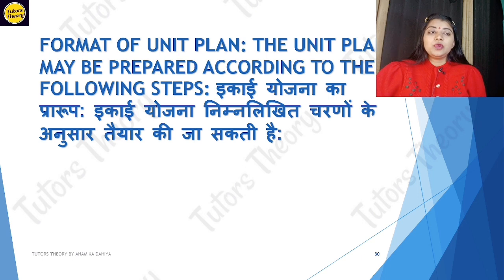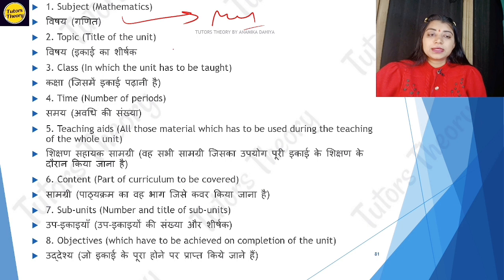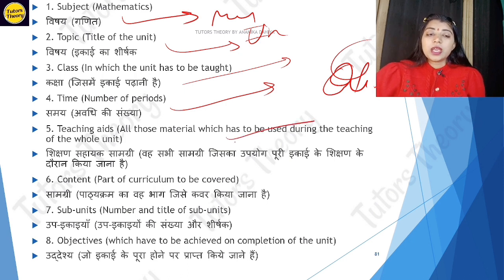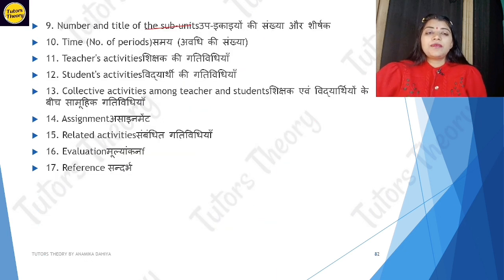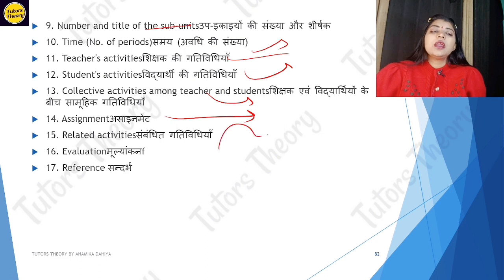The format for unit planning: the unit planning may be prepared according to the following steps. First, know the whole subject — subject name, topic, unit name, class name, number of periods required, teaching aids to be used, how content will be covered, sub-units, and objectives. Then number of titles, time per period, teacher activities, student extra activities, collective activities, teacher-student assignments, relative activities, and finally evaluation and references.